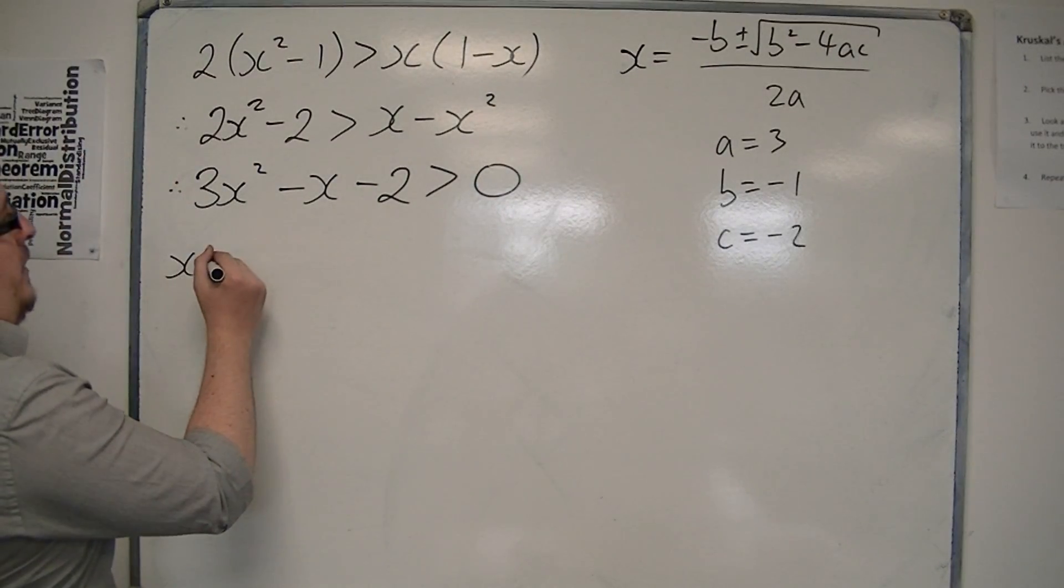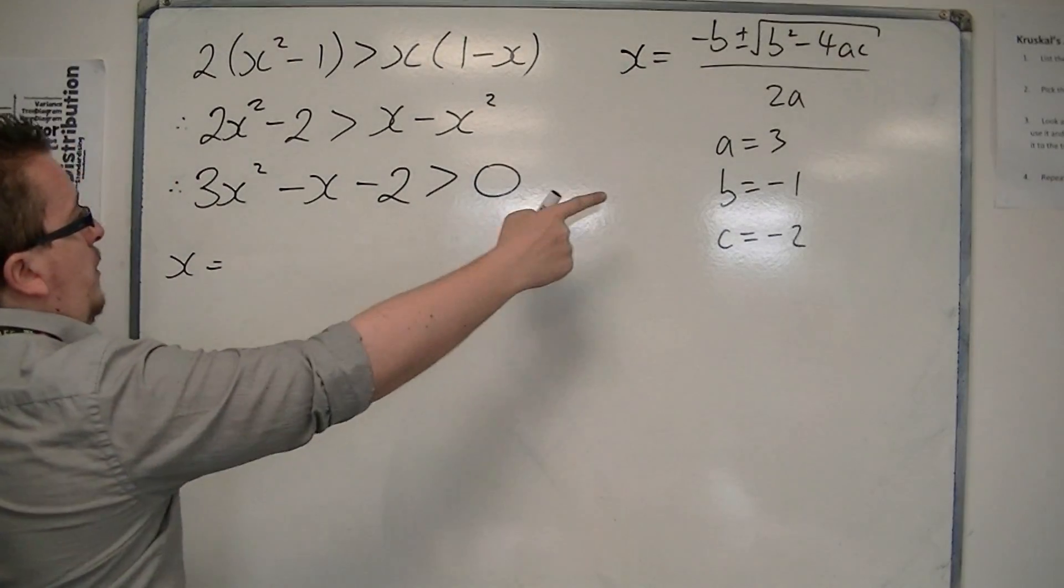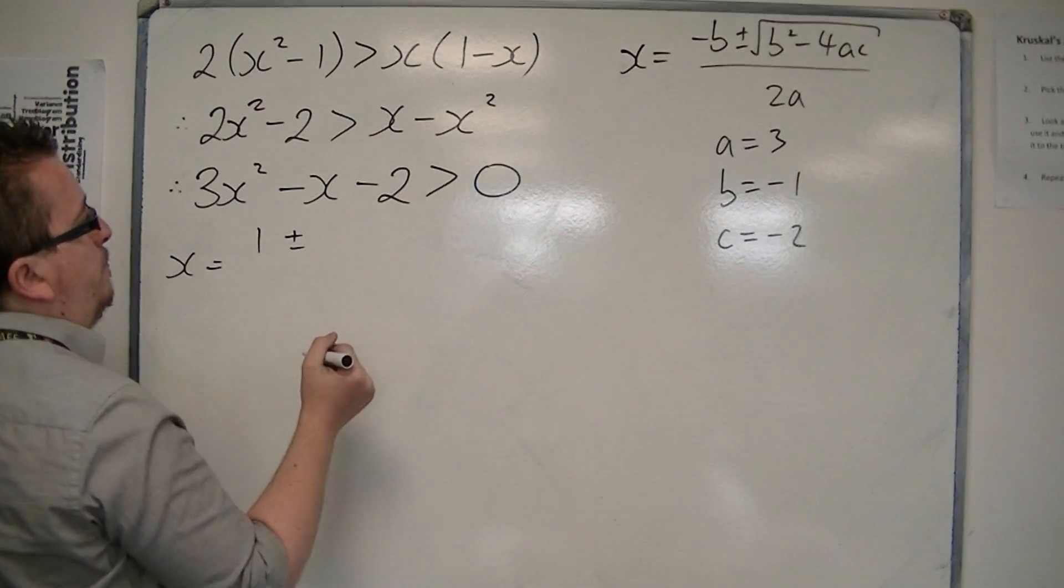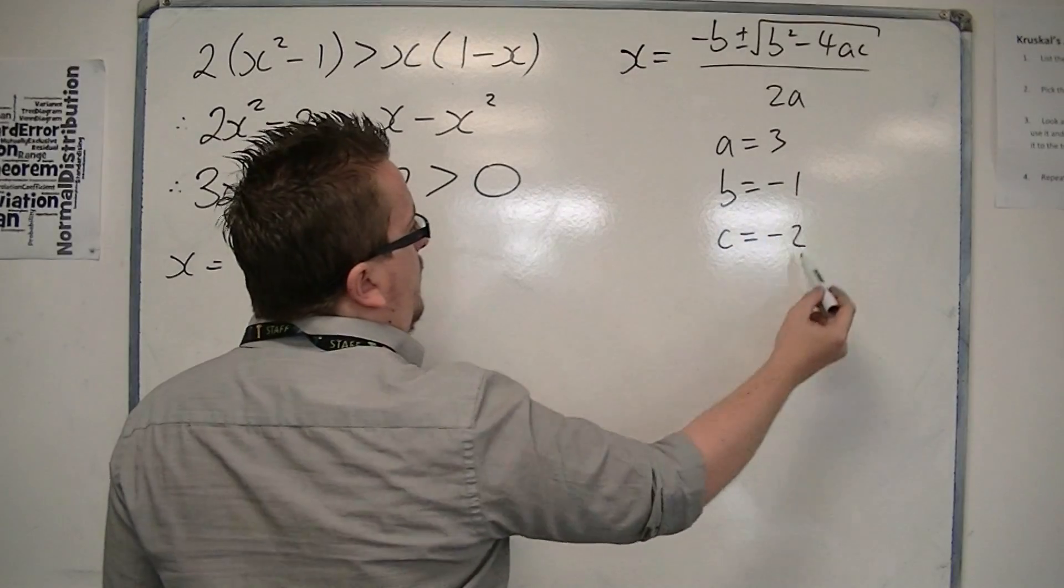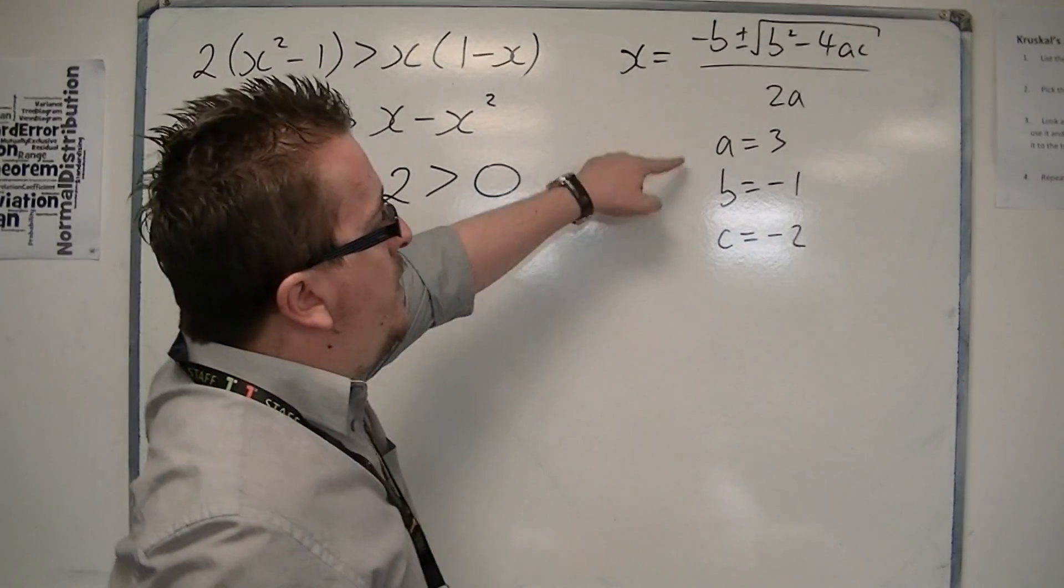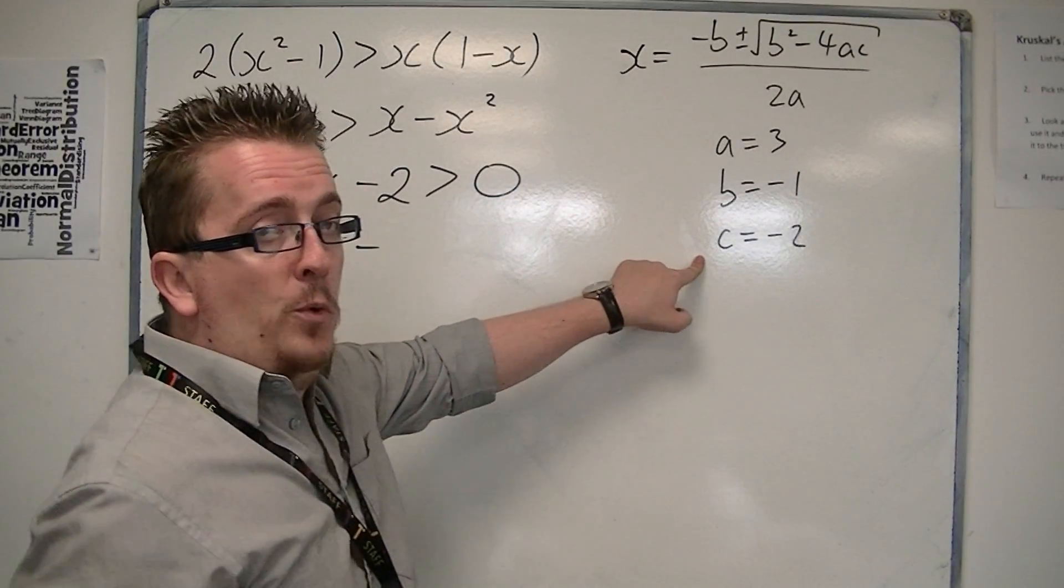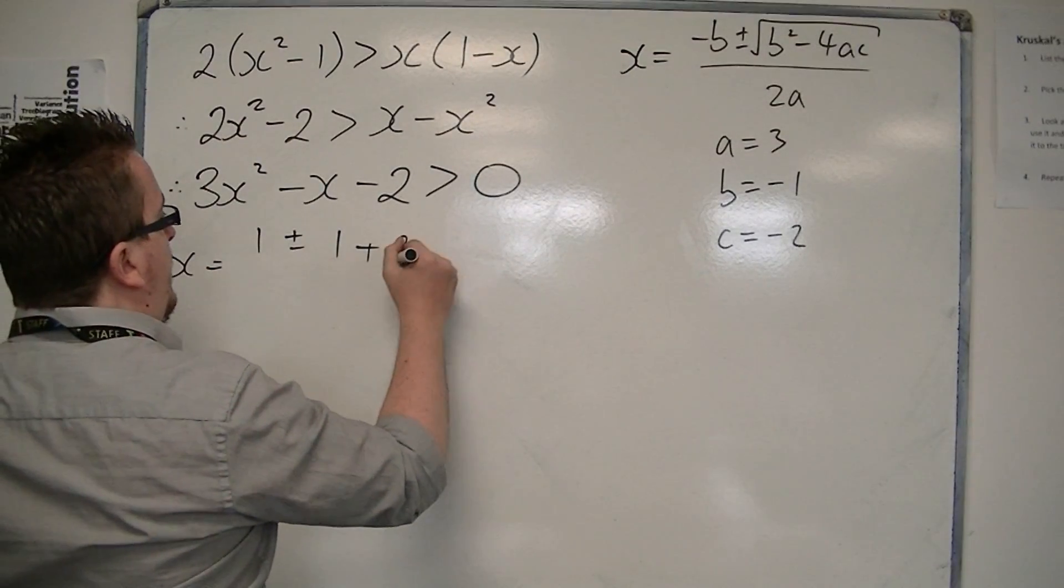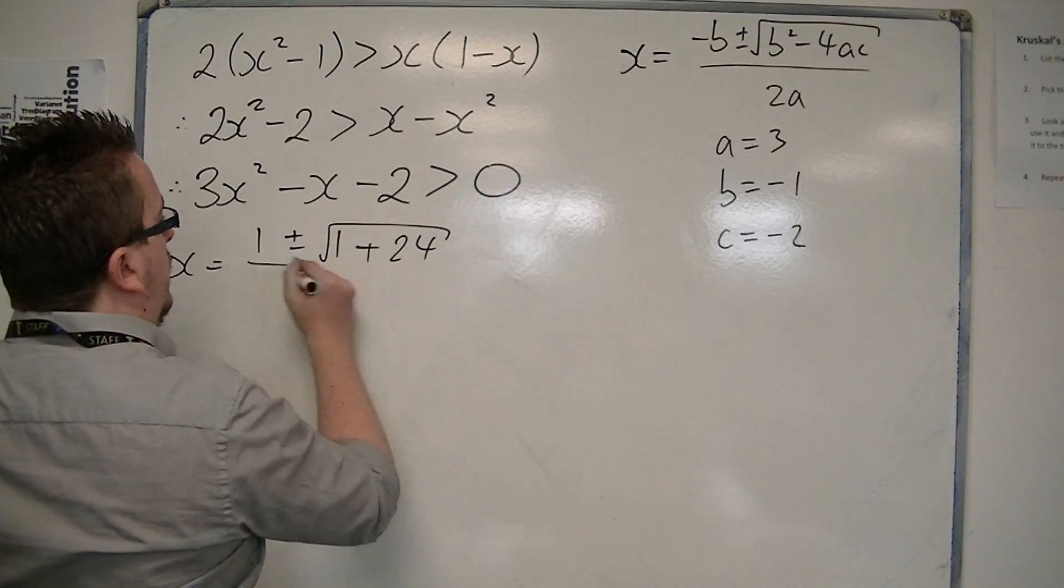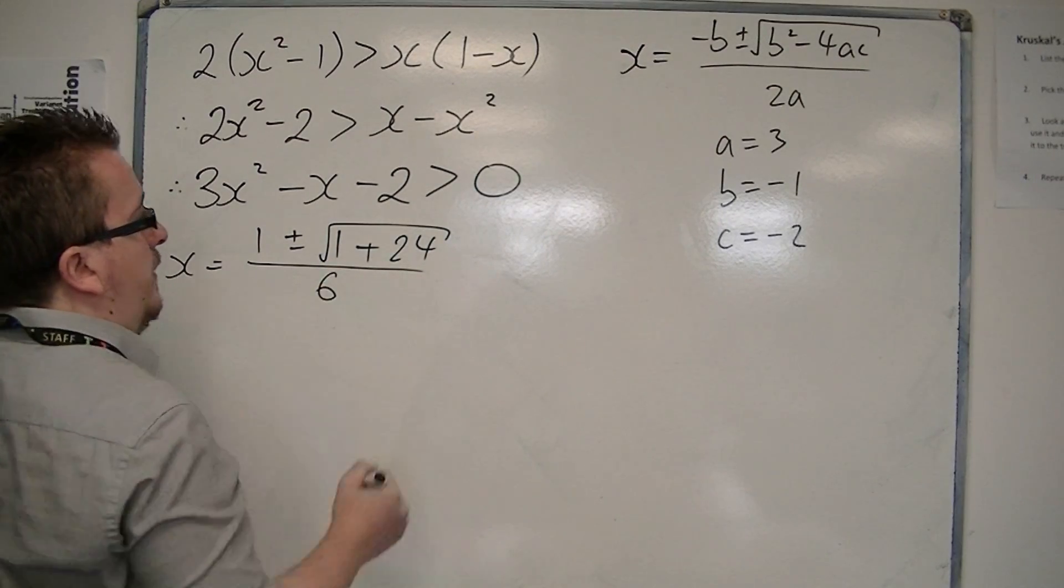So x equals -b, which is 1, plus or minus √(b² - 4×3×(-2)). So 3 × -2 = -6, and 4 × -6 = -24, so that's +24, all over 2a, which is 6.